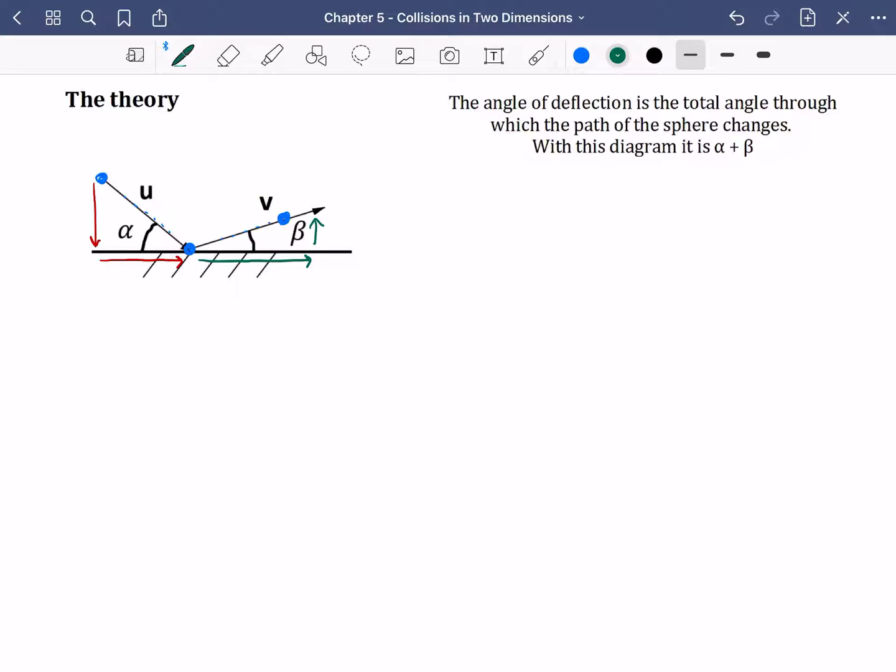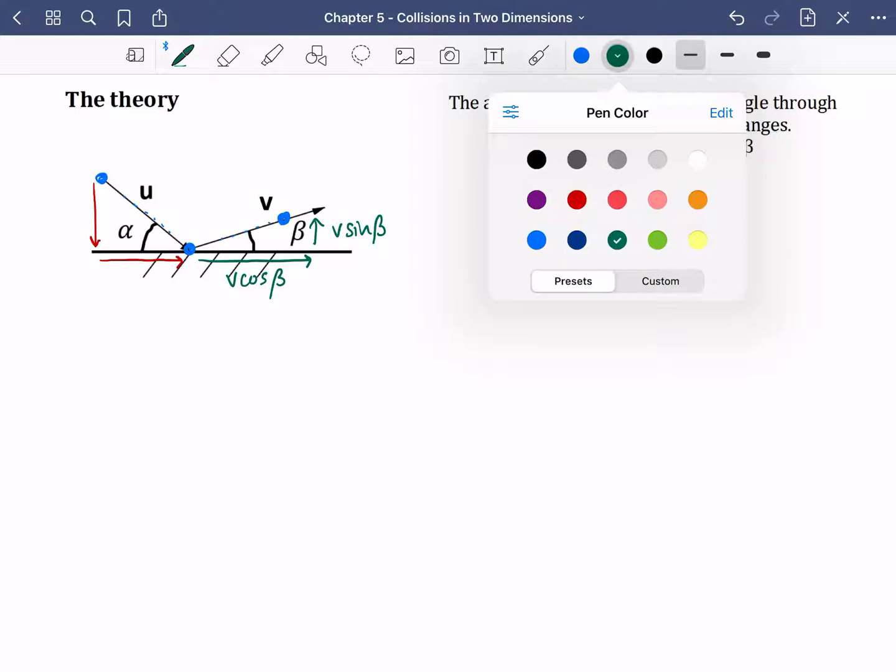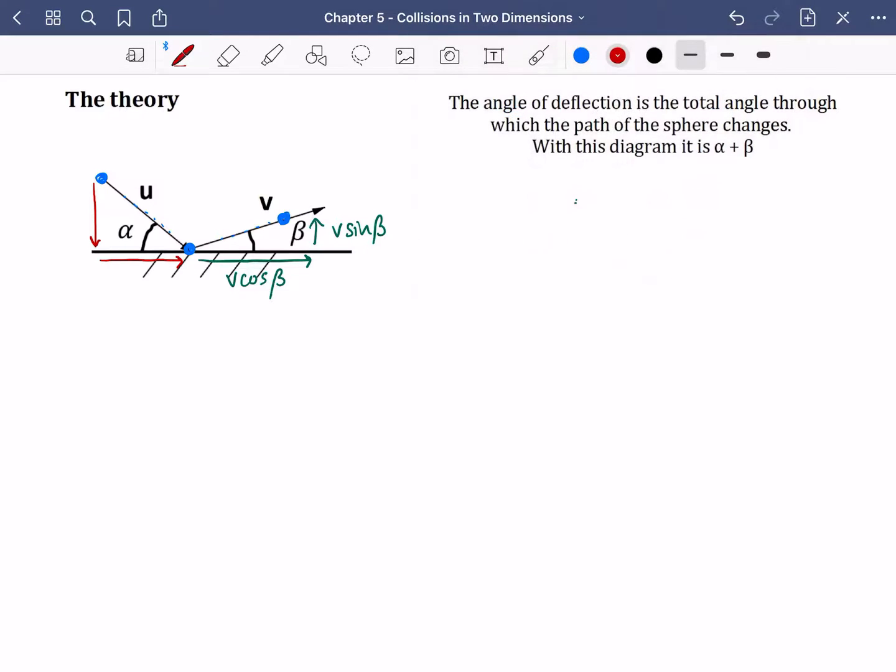So this running up here is v sine beta because it's on the opposite. And this one would be v cos beta. Going back to the one that we have on the left, the initial speed. There we go. This is u sine alpha because it is clearly opposite the angle. And then the other one must be u cos alpha.